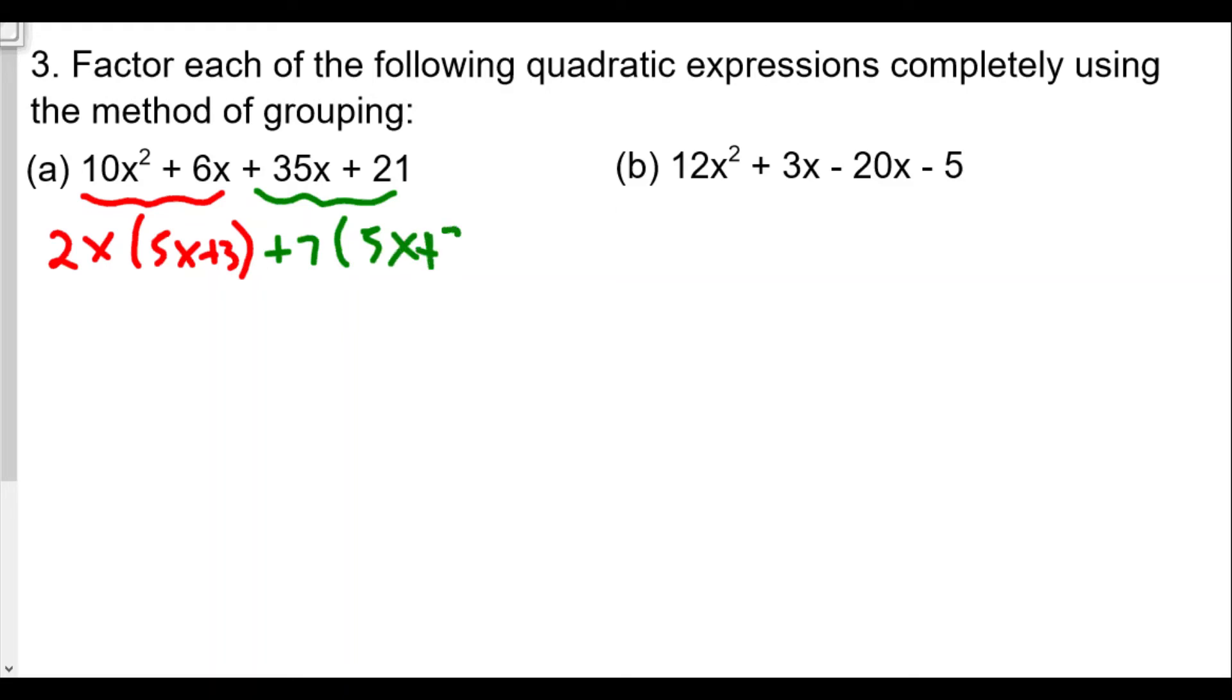For those of you who are wondering how do I know I'm on the right track, you will notice that these factors, the factors we left over, are going to be the same. That's how you know you've been factoring by grouping correctly. You found the right pair and found the correct GCF for each pair.